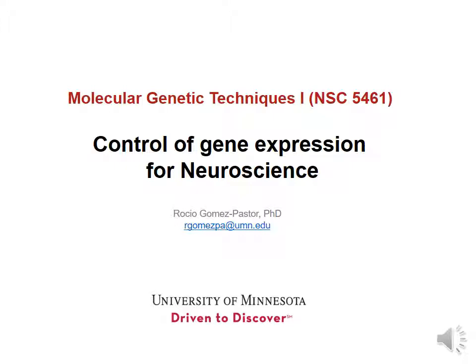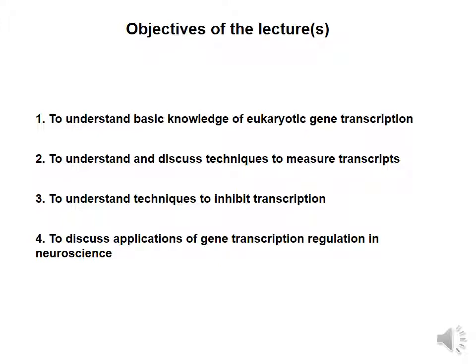Welcome to the first video of the control of gene expression for neuroscience lecture, which is divided into four different videos. The objectives of this lecture are to understand basic knowledge of eukaryotic gene transcription, discuss different techniques to measure transcripts and analyze gene expression, and see how we can manipulate transcription by different techniques to inhibit gene expression. Finally, we will discuss applications of this knowledge to study gene transcription regulation in the context of neuroscience.